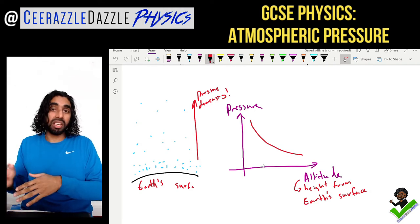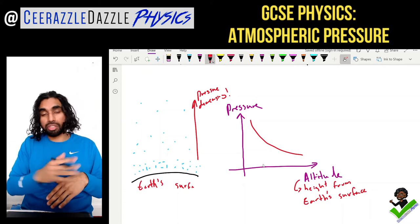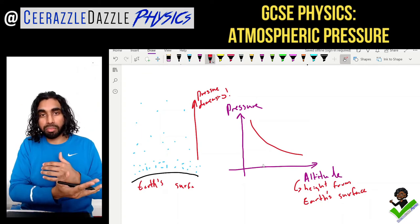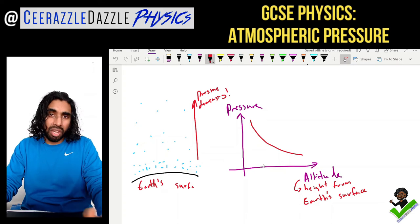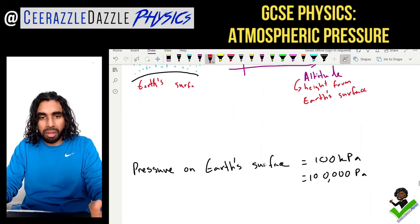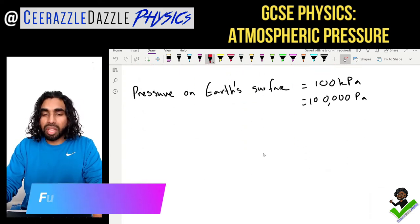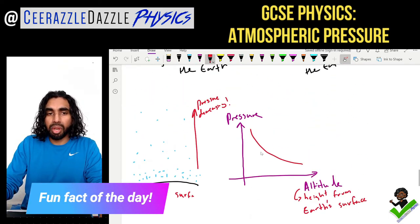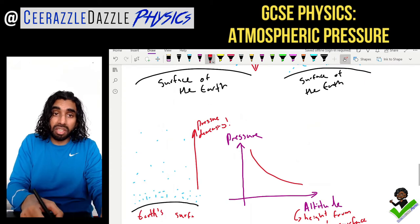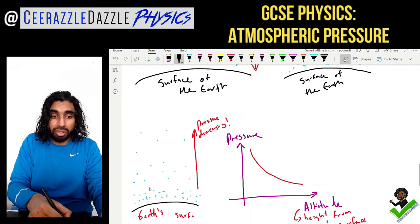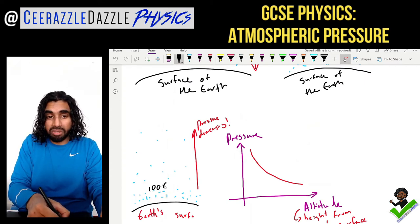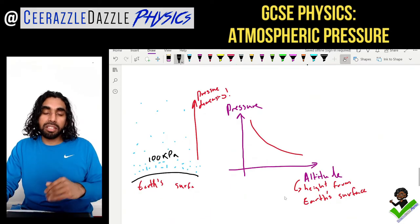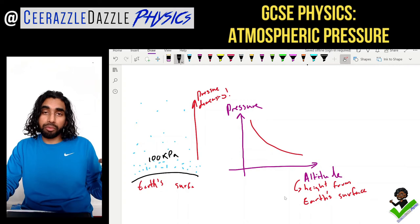As altitude increases, pressure drops down. A little bit of extra knowledge: the pressure on the earth's surface right now is 100 kPa — a hundred kilopascals.